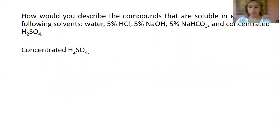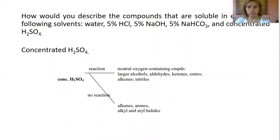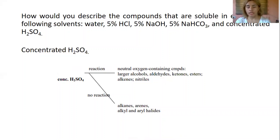For unknowns soluble in concentrated sulfuric acid, a reaction must occur. Commonly, these unknowns are neutral oxygen-containing compounds such as larger alcohols, aldehydes, ketones, esters, alkenes, and nitriles. If no reaction occurs, the unknown is probably an alkane, arene, alkyl halide, or aryl halide.